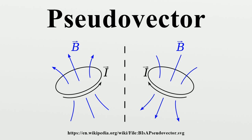One example is the normal to an oriented plane. An oriented plane can be defined by two non-parallel vectors R and B, which can be said to span the plane. The vector A times B is a normal to the plane and is a pseudovector. This has consequences in computer graphics where it has to be considered when transforming surface normals. A number of quantities in physics behave as pseudovectors rather than polar vectors, including magnetic field and angular velocity.